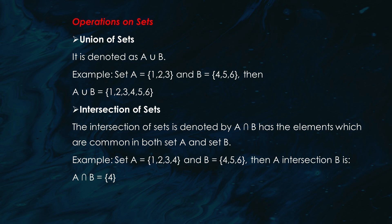(2) Intersection: A ∩ B. This is where we find the common elements between sets. If set A = {1, 2, 3, 4} and set B = {4, 5, 6}, then the intersection of A and B = {4}.